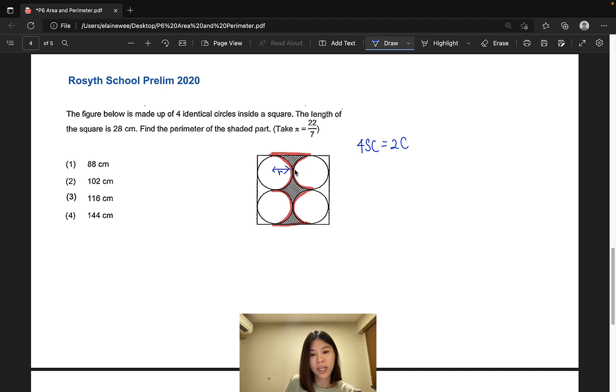Now looking at the horizontal lines here and here, we can see that the length from here to here is actually the radius of one circle. So we actually have one radius, two, three and four all together. So we can work out four radius, which is actually two diameters right away. Since the length of the square is 28 cm and 28 cm is the length of two diameters, we actually already have this part settled.